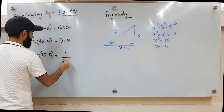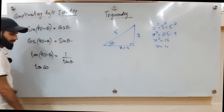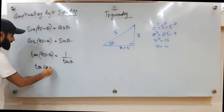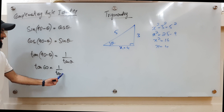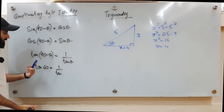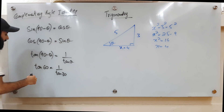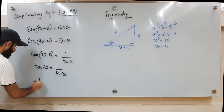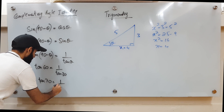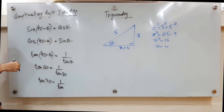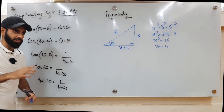For example, tan 60 = 1/tan 30, since 60 and 30 are complementary. Similarly, tan 70 = 1/tan 20, since 70 and 20 are complementary. You can verify these in your calculator and notice they're exactly the same.